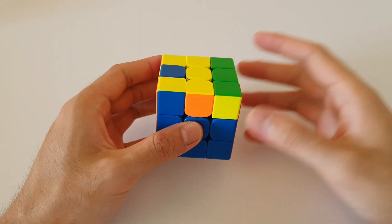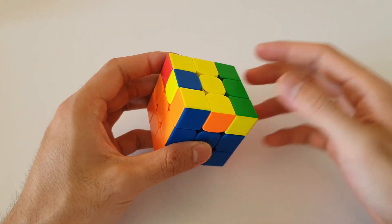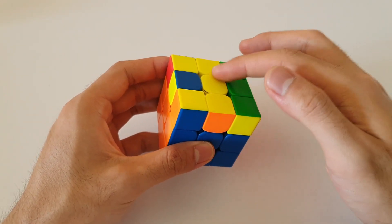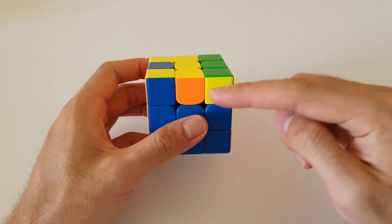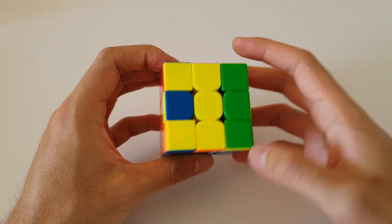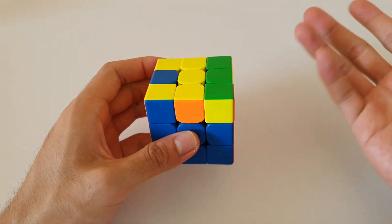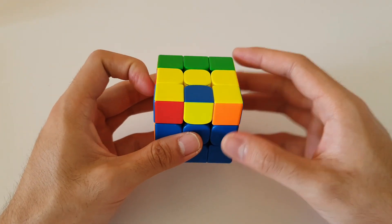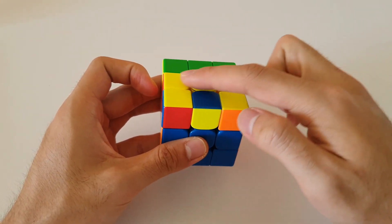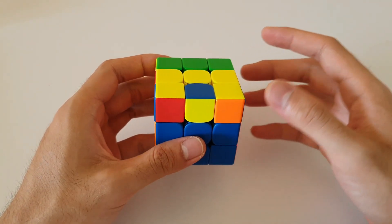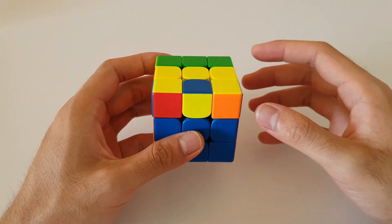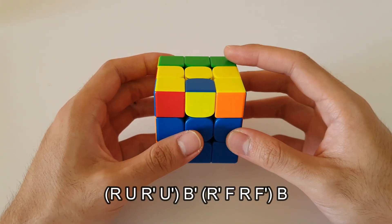And finally we have this C shape here. Similar to the previous case we also have the C on the top layer. But in this case we do not have that 3x1 bar. The yellows are instead a bit more spread out around the sides. For this case we actually want to hold it so that the C is facing you at the front. Now there's a couple of different algorithms that are pretty good for this case. The one that's easiest to remember would be the one I'm about to show you.